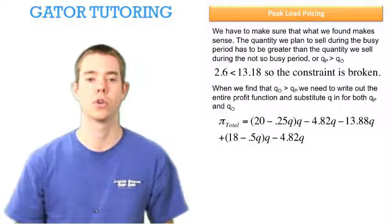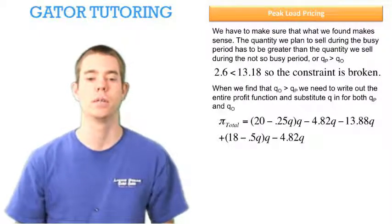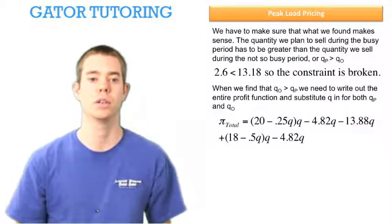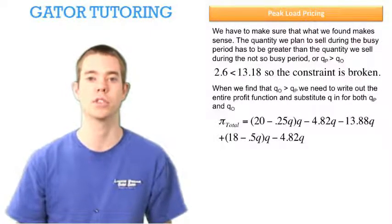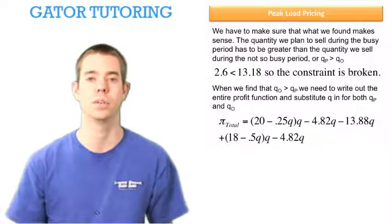Notice that this is the total revenue during the peak period minus the total cost during the peak period, plus the total revenue during the off-peak period minus the total cost. But now we've gotten rid of those subscripts and we only see Q.